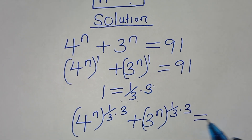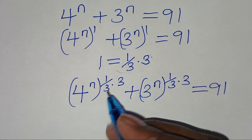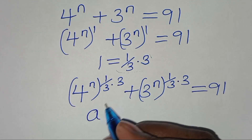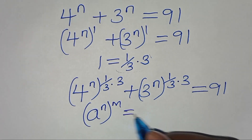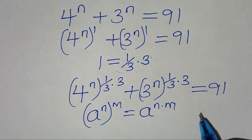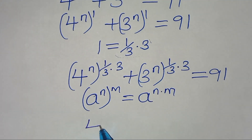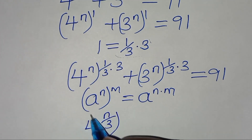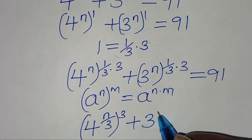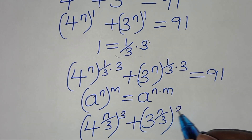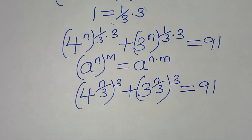This is in the form of a to the power n raised to the power m, which we can express as a to the power n times m. Applying this exponent property, we have 4 raised to the power n over 3, all raised to the power 3, plus 3 raised to the power n over 3, all raised to the power 3, equals 91.